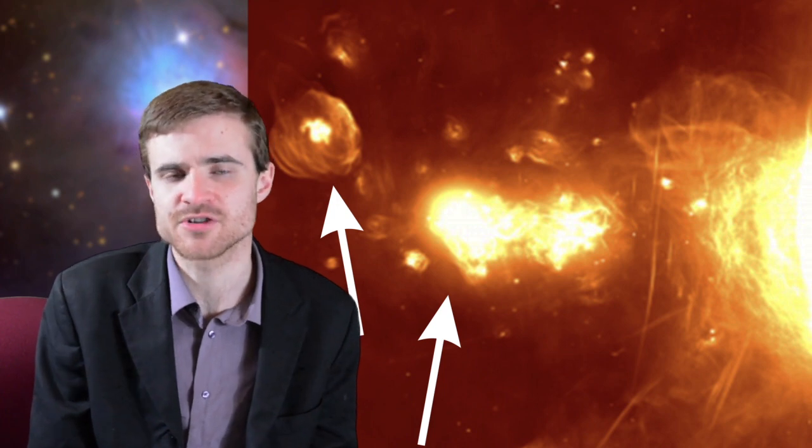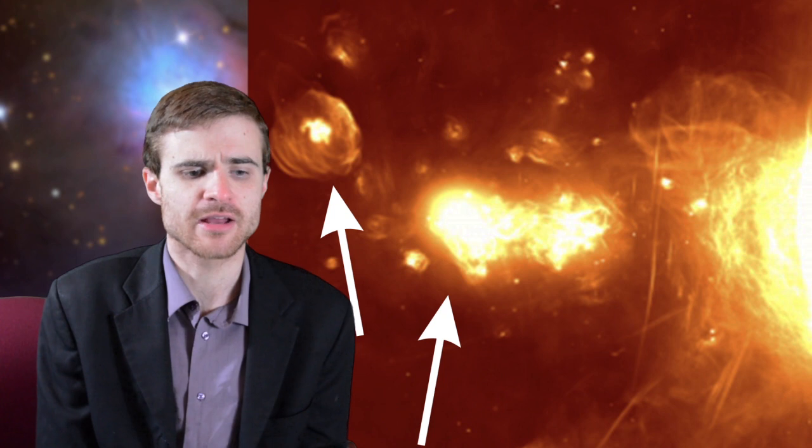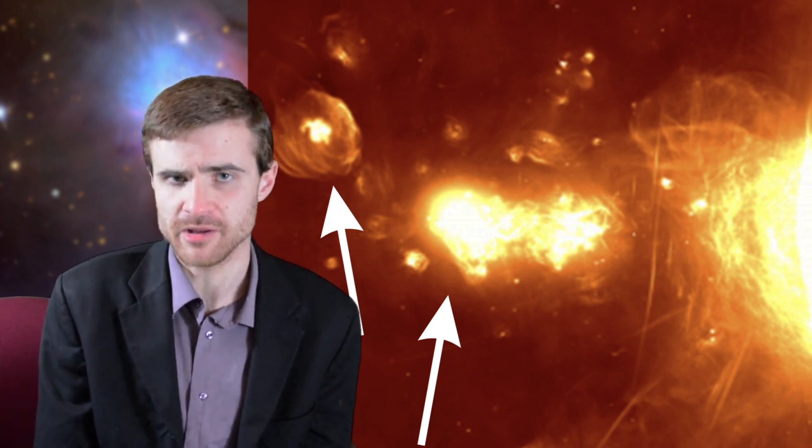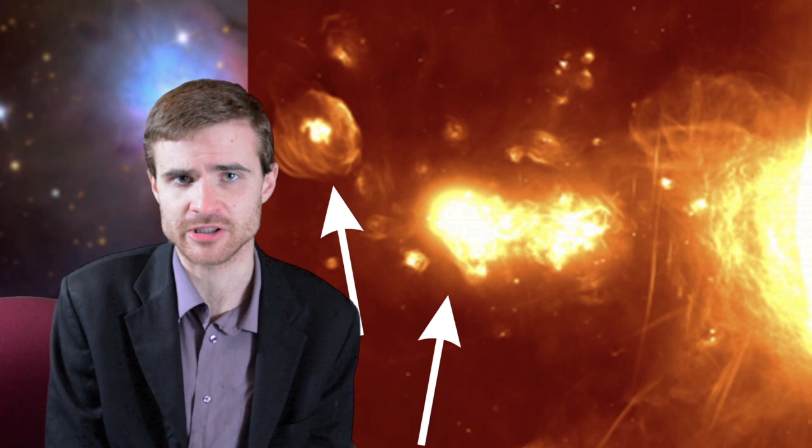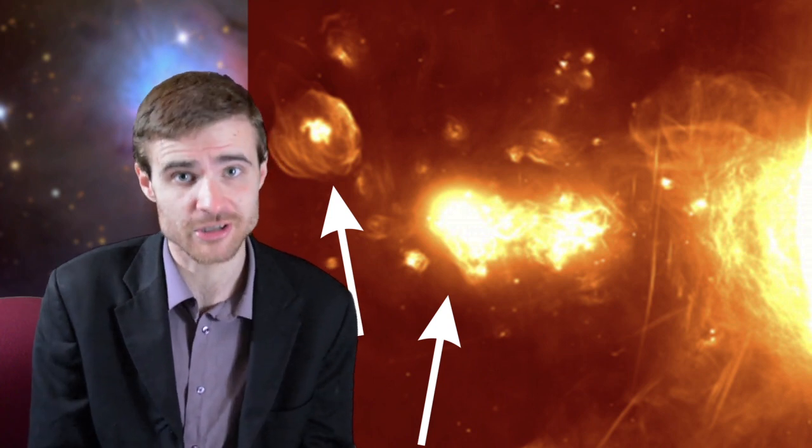When a star blows up and goes supernova, it creates these bubble-like shock waves that come out. Stars that are really big that create supernova explosions don't tend to live very long, only a few million years, which is pretty short for a star's lifetime. This means that star formation has taken place relatively recently in the environs of the galactic center. Again, a standing mystery.